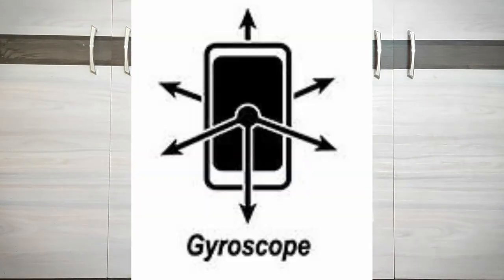Next we have a gyroscope sensor. When we rotate the phone, we can see that direction. The gyroscope sensor works 360 degrees. You can see this in racing games — at that time you can tilt your mobile, and that's why we are working on the gyroscope sensor.